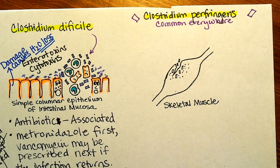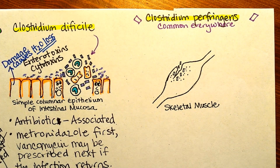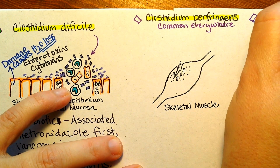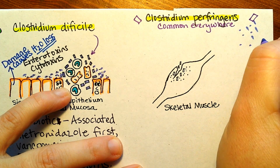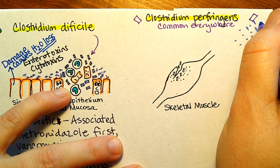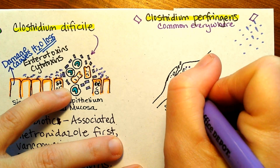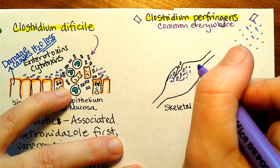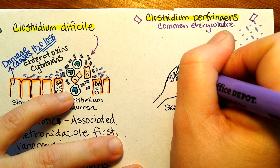In immunocompromised individuals, or if there's a very high infectious dose of the bacteria, we can start to see the toxins cause disease. The most famous toxin is called an alpha toxin, and these toxins can get into the skeletal muscle — let's say in a trauma wound that is left uncleaned.